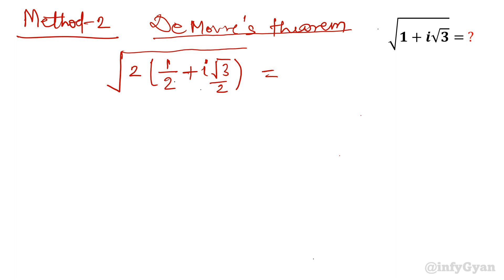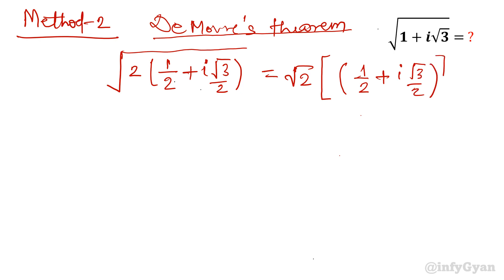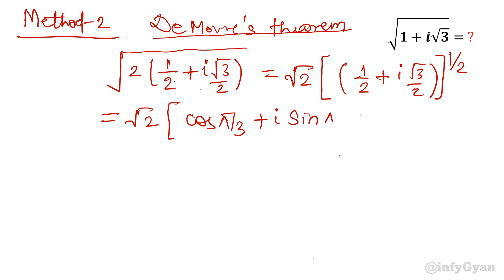This square root, taking root 2 outside, the remaining part 1 over 2 plus i root 3 over 2 is cos 60 degrees. So the angle is pi over 3. I am writing inside the bracket cos pi over 3 plus iota sin pi over 3, raised to the power half. Writing this as e raised to the power i pi over 3, whole to the power half.